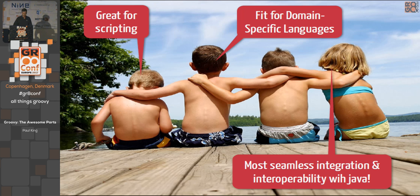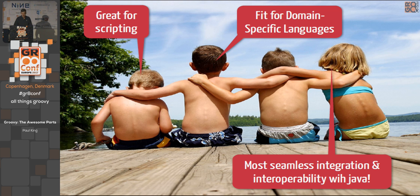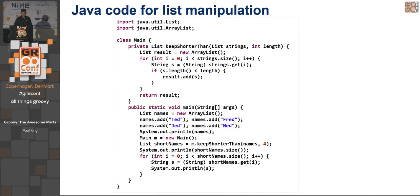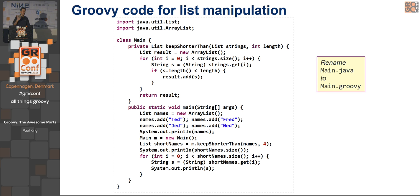We all know Groovy is great for scripting. Seamless integration with Java is one of its real strengths, and it's really useful for domain-specific languages. Gradle and Grails can be thought of as domain-specific languages for writing web apps and builds. Here's some Java code for list manipulation — I'm going to turn it into some Groovy code. I just renamed the file from .java to .groovy. This demonstrates the low learning curve.